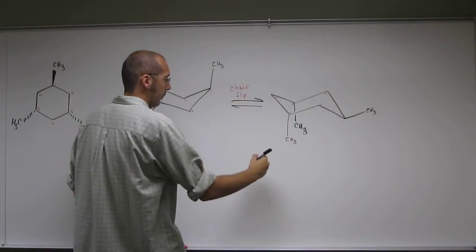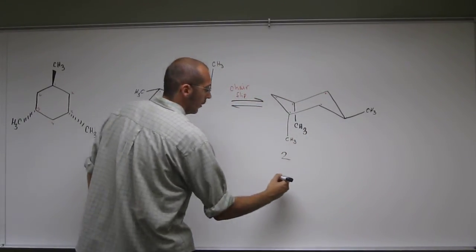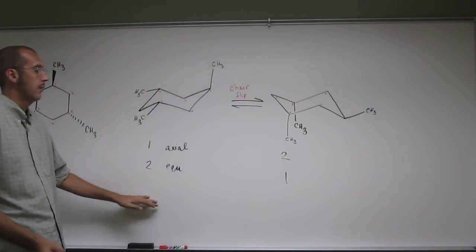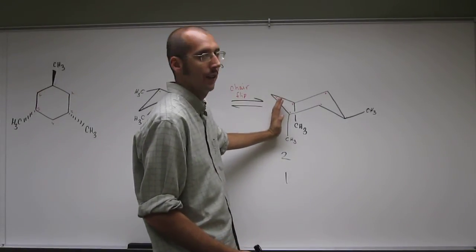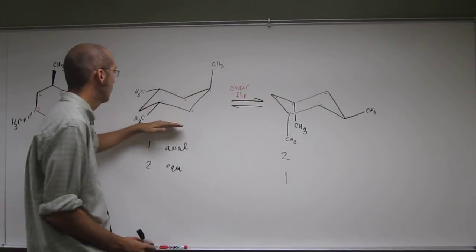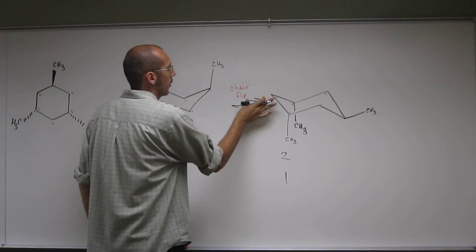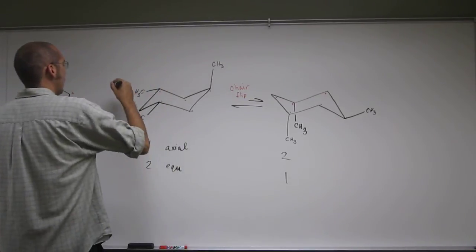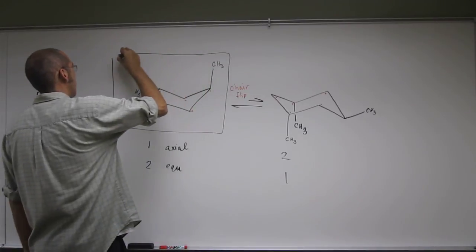And we ask ourselves, how many axials do we have? Well, 1, 2. How many equatorials? 1. So remember, axials are less stable than equatorials. So this one is the less stable structure. This one's the more stable structure. So if we wanted to write our equilibrium arrow, it would be like that. And I think it said, what's the most stable structure? So we'll do that one.